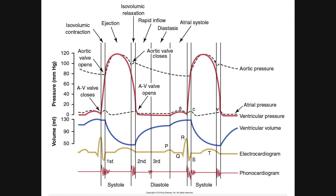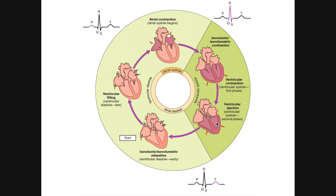When the aortic valve opens, we enter the ejection phase. Blood is being ejected from the left ventricle — pressure goes up, peaks, and then starts to come back down. Looking at the volume, during isovolumetric contraction the volume was flat-lined, but as soon as the aortic valve opens and left ventricular pressure exceeds aortic pressure, we get ejection and a rapid decrease in volume in the left ventricle, because blood is moving from the left ventricle out through the aorta into the systemic circulation.